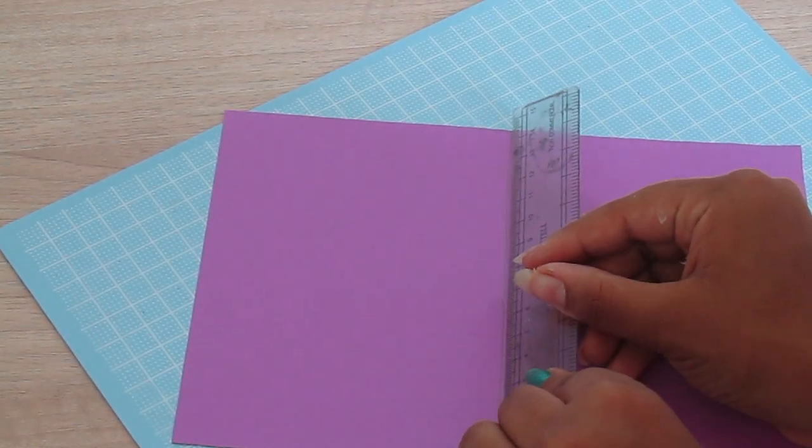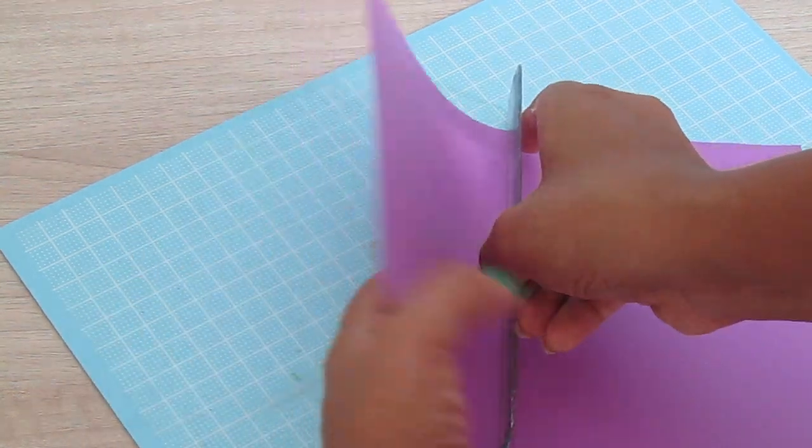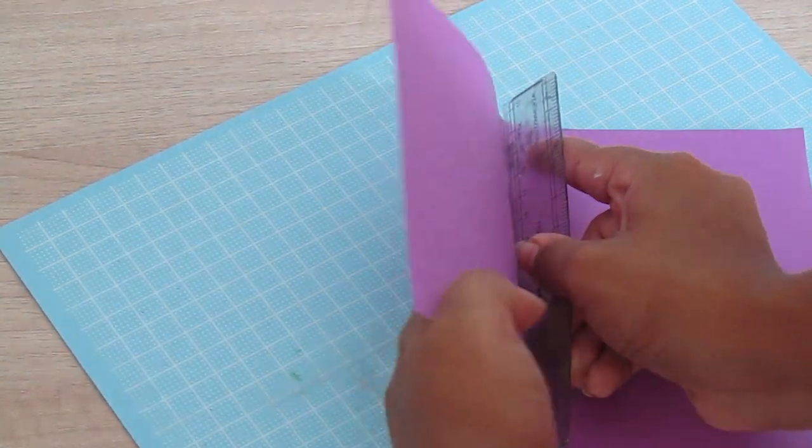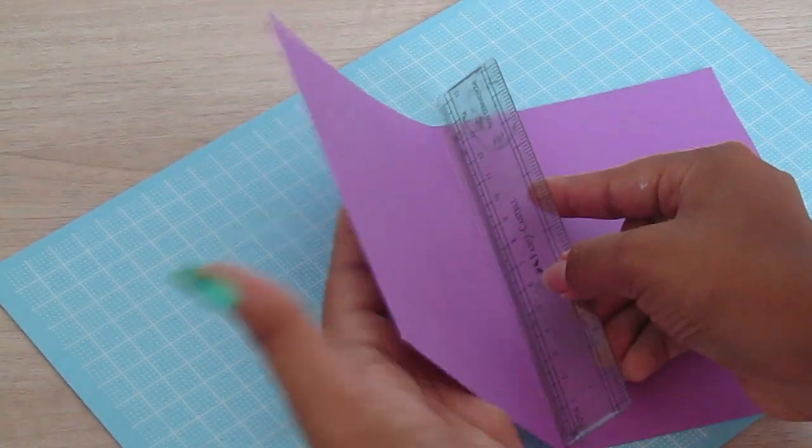Now we're going to define the thickness of the book again. You want to place your ruler onto the lines of the 0.4 thickness area and create a crease on it. You're giving it some volume so it stands out looking like a book.